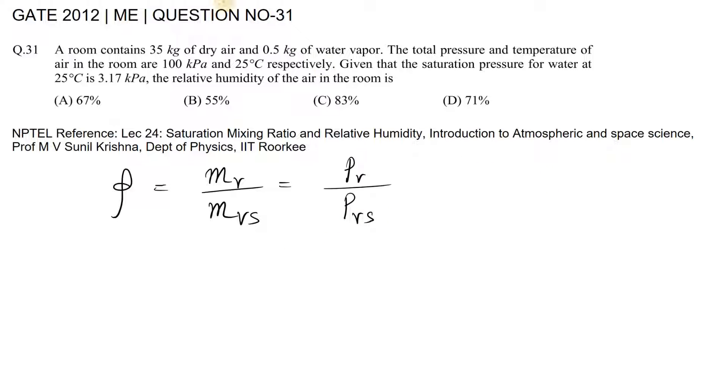In the problem, ma is given as 35 kilograms, where ma means mass of dry air, and mv is given as 0.5 kilograms.